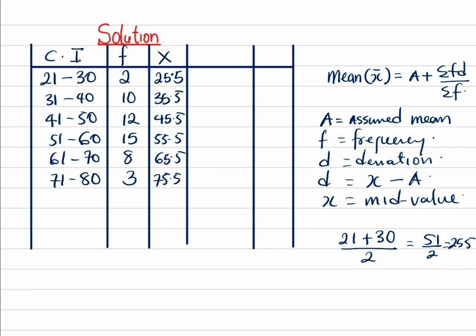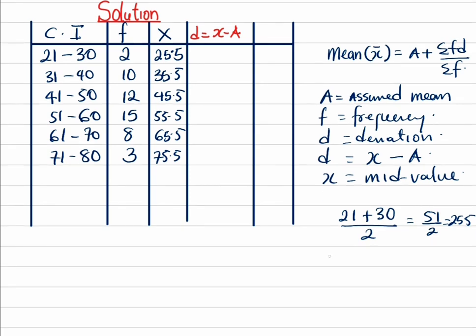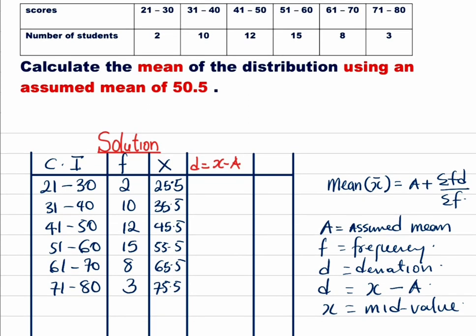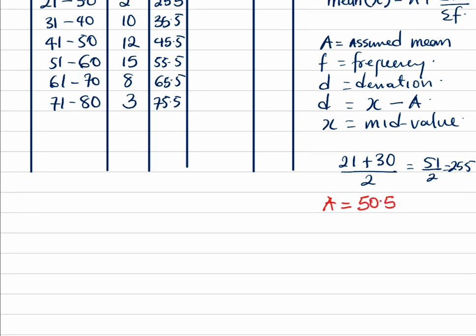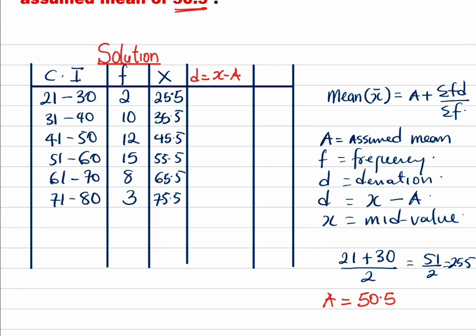Now the next thing we are going to get is our deviation. This is very important. The deviation d, of course we know, is equal to x minus A. Now we begin to wonder what is A. Let's go back to the question. A has been given to us, can you see it? A is 50.5, so we have 50.5 as our A.